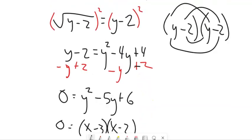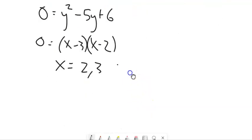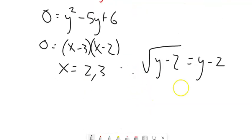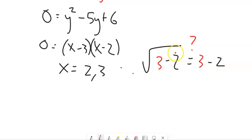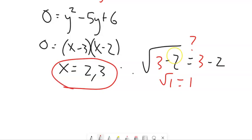Let's check it. Plug the 2 in — 0 equals 0, yep. Let's plug the 3 in — 3 minus 2 is 1, square root of 1 is 1. Yeah, they both work. So in this case, we can keep both of those answers.